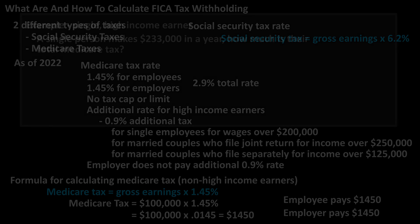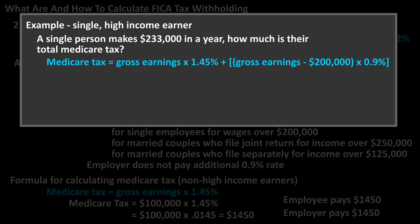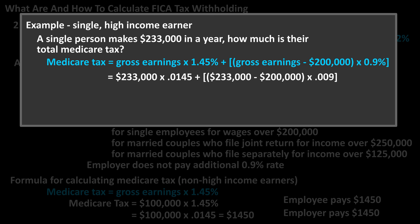For a single or non-married earner that has a high income, say $233,000, the formula would be: Medicare tax equals gross earnings times 1.45% plus the quantity gross earnings minus $200,000 times 0.9%. For $233,000, this would be Medicare tax equals $233,000 times 0.0145 plus the quantity $233,000 minus $200,000 times 0.009.